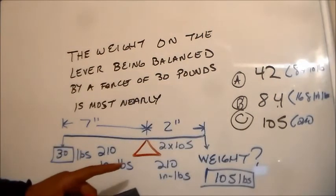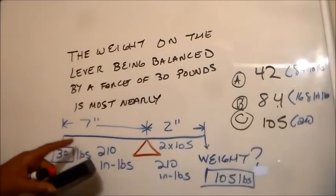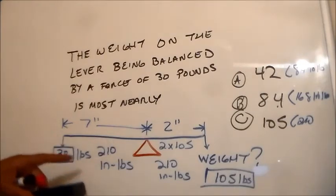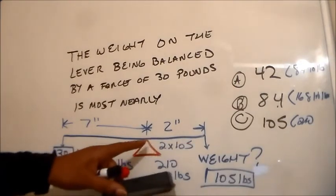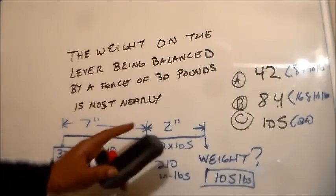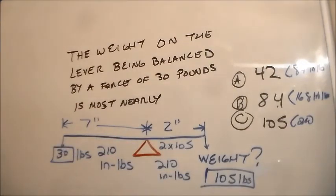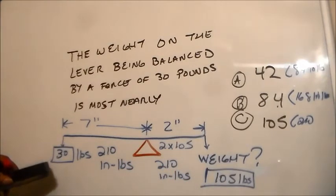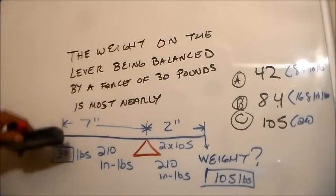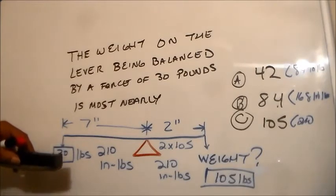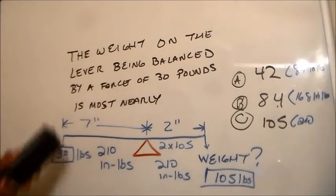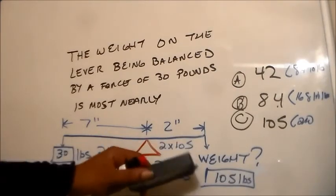It's kind of like you've got a small lighter kid on this side with all this distance balancing out the fat kid closer to the seesaw balance point. So our fat kid is over here. He's 105 pounds. And then we got the little toddler, 30 pounds. And they're just balancing each other out perfectly. But the little kid has to be further away in order for the pound-inches to measure up to balance out the bigger kid.